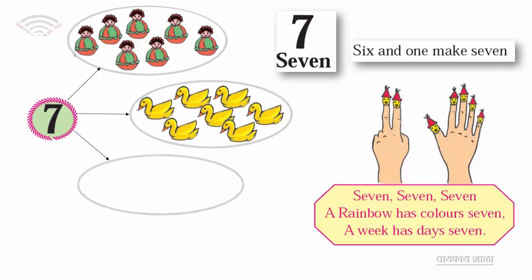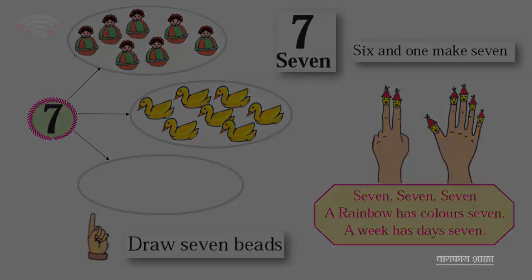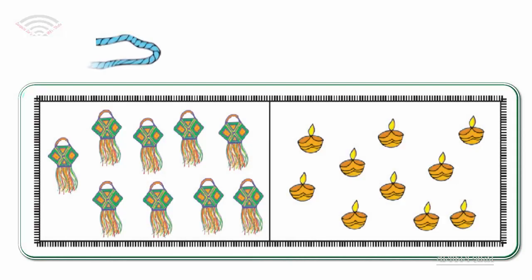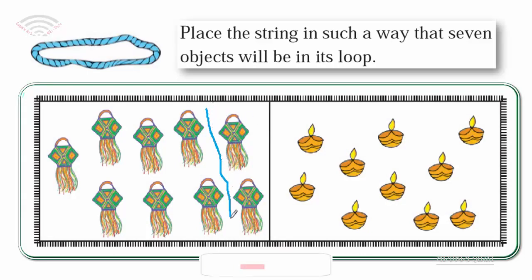In this round, draw 7 beads in your textbook. Place the string in such a way that 7 objects will be in its loop.